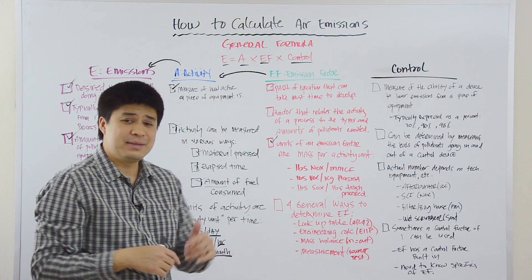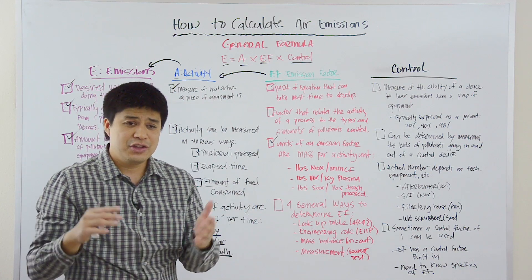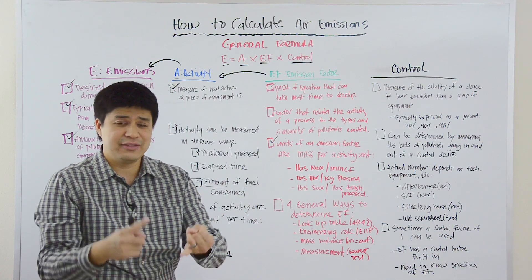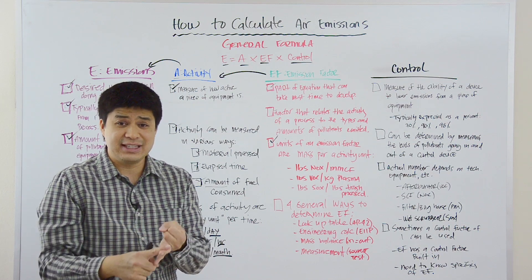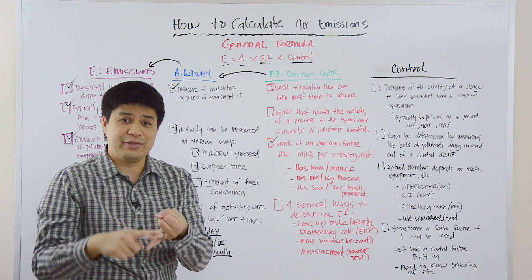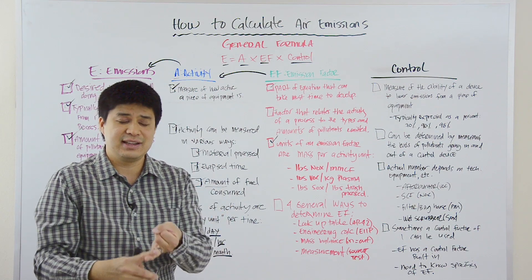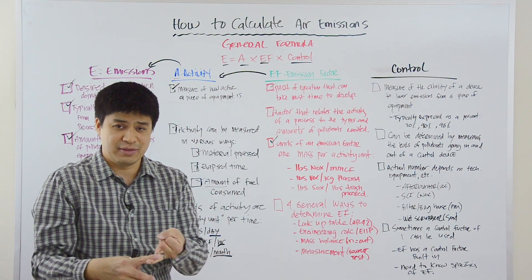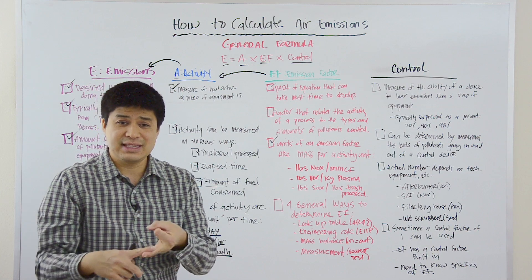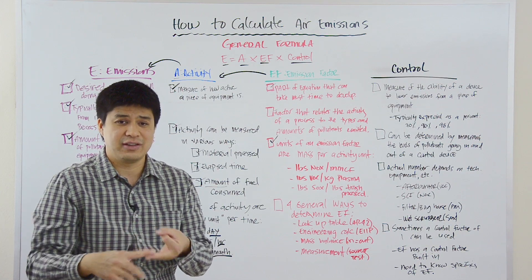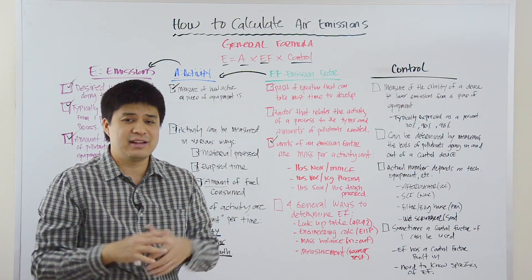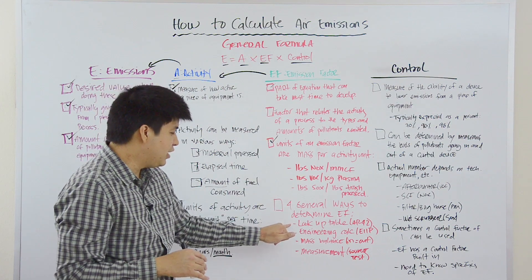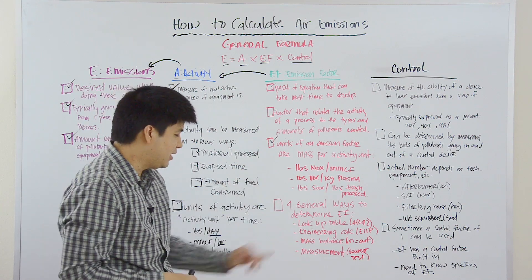And number one, you can simply look them up in a table. AP 42 is a very big database, a very well-known database of emission factors. You can also go to agency websites of local, state, federal agencies and look through their databases to look for emission factors. You can look at MSDS sheets. Sometimes there'll be an emission factor there. Equipment specification. You can go back to a trade organization. And so, there are many different ways that you can find or you can simply look up an emission factor on the table.